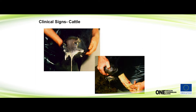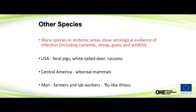It affects many species, and people look in lots of different species for antibodies. Many different species have antibodies, though whether they are able to transmit the virus requires further study. Antibodies have been found in pigs, white-tailed deer, raccoons, arboreal mammals, and of course in humans.